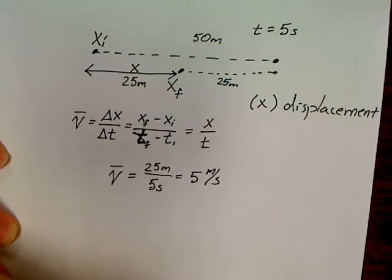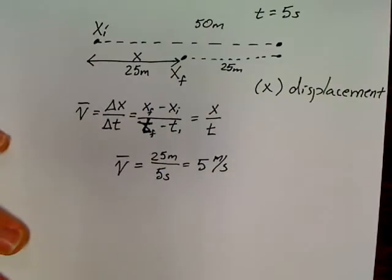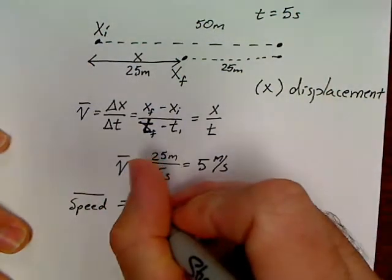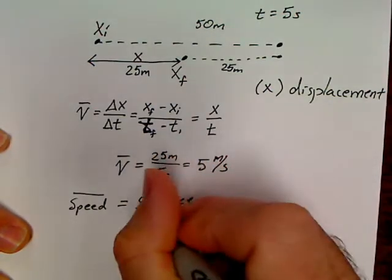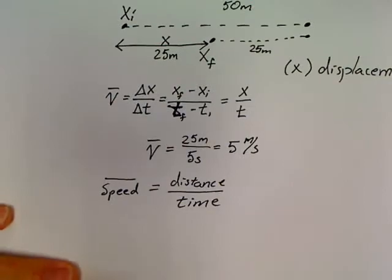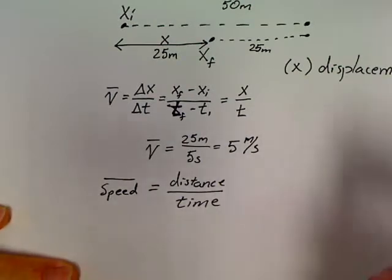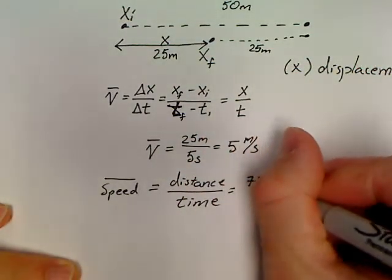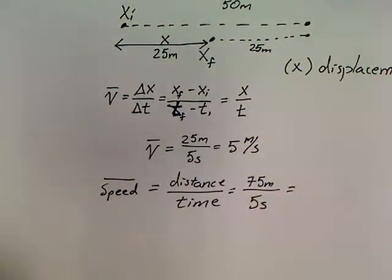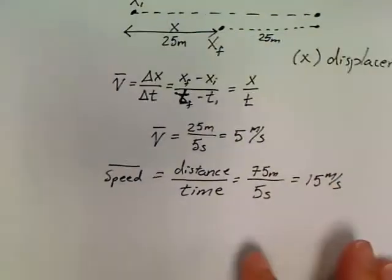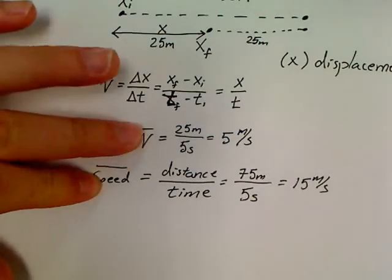Now, speed is not something that we're going to see that much in physics. I'm not even going to write an equation for speed. I'm just going to say average speed equals distance over time. Because that's what speed is referring to. Speed is simply referring to distance over time. So, in the case of this problem, this person traveled a total distance of 75 meters in a time of 5 seconds, which means 75 divided by 5 is 15 meters per second.